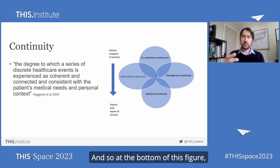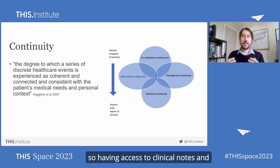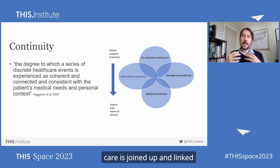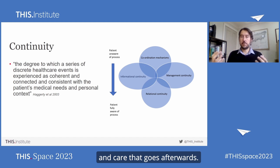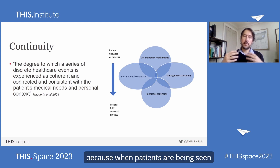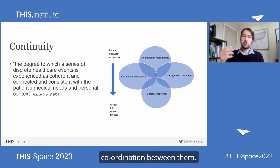At the bottom of this figure, you have relational continuity, which is seeing the same clinician. The circle on the left-hand side is informational continuity — having access to clinical notes and medical information. The circle on the right-hand side, management continuity, is the idea that care is joined up and linked with care that's gone before and care that goes afterwards. I've added to this coordination mechanisms, because when patients are being seen by multiple clinicians or different providers, there needs to be some coordination between them.